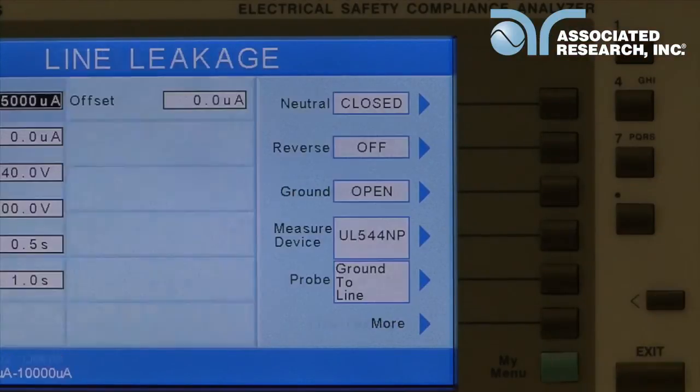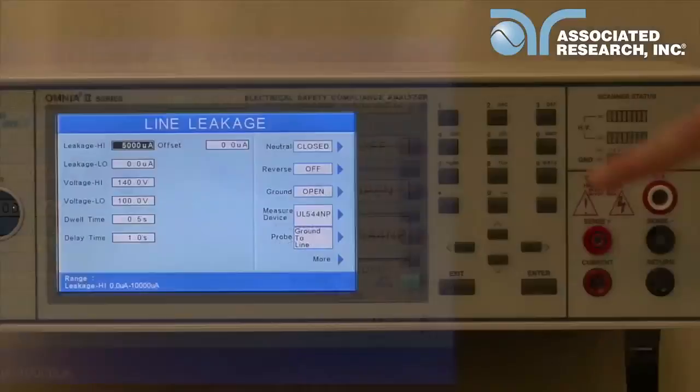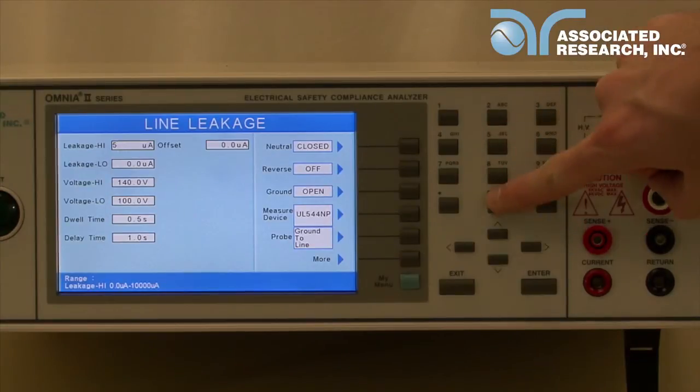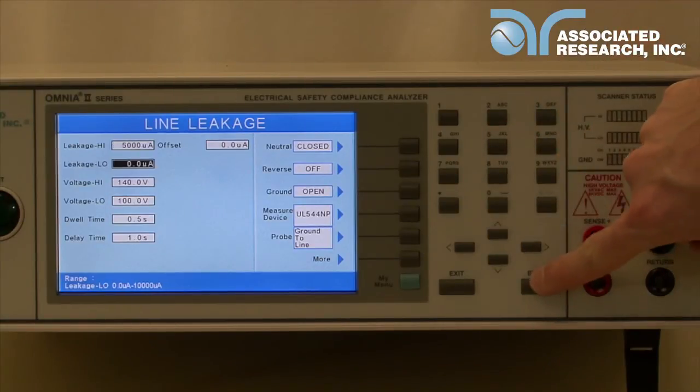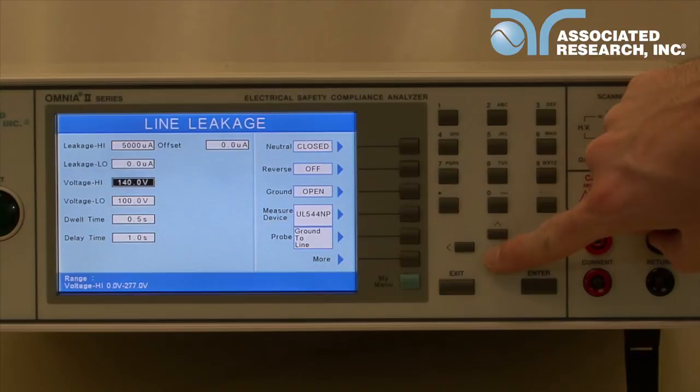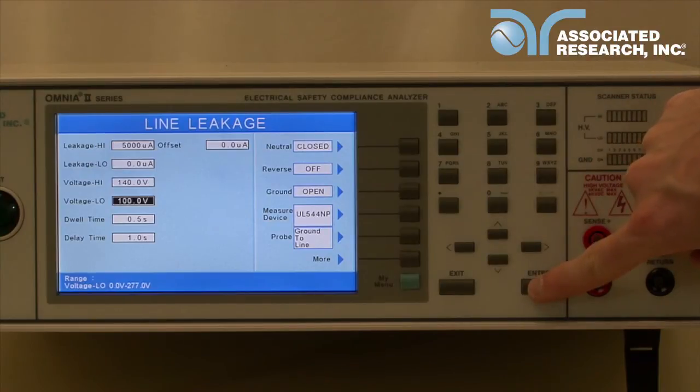This will take you to the line leakage parameters window. From here, use the arrow keys and alphanumeric keypad to enter your test parameters. Press the enter key to accept each parameter before moving on to the next one.